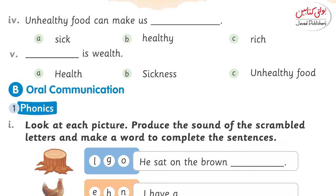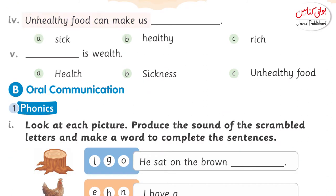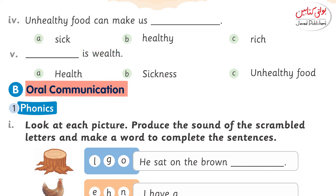Number 4: Unhealthy food can make us sick. Number 5: Dash is wealth. The answer is: Health is wealth.